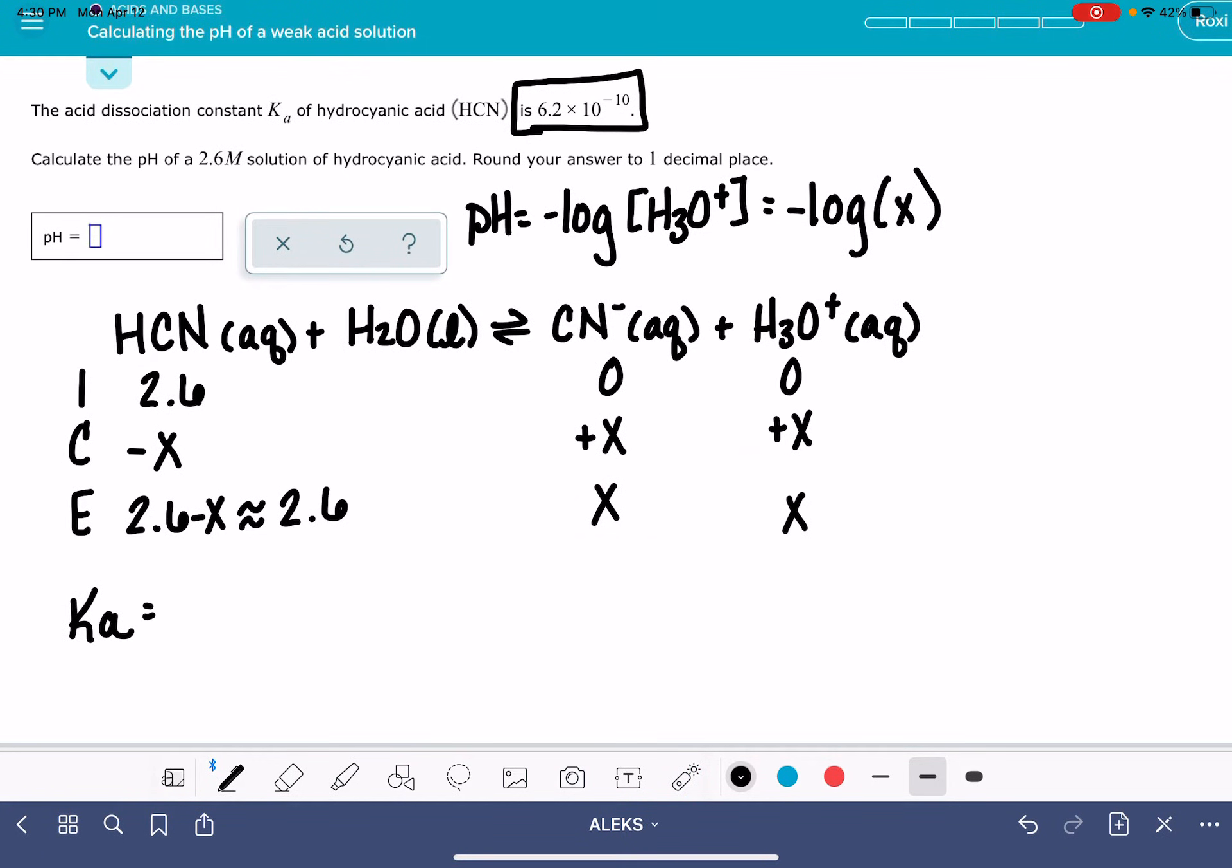Ka equals our products, cyanide CN minus times H3O plus divided by our reactant HCN. We're leaving water out of this equilibrium expression because water is a pure liquid and we always omit pure liquids and solids from the equilibrium expression.